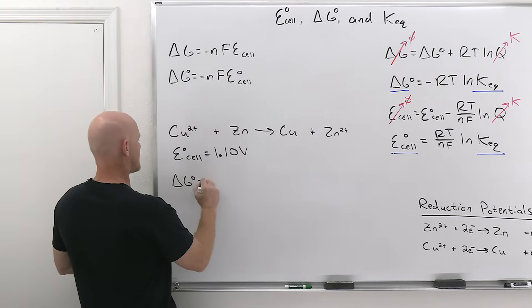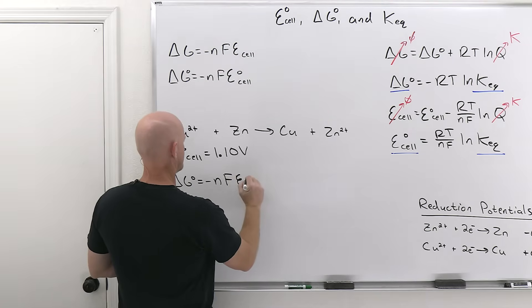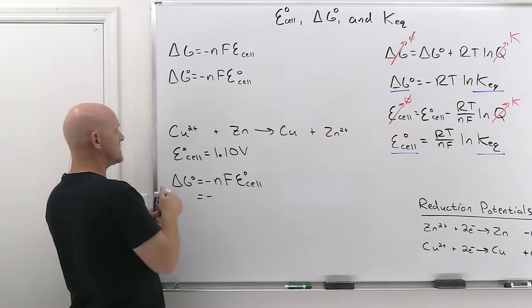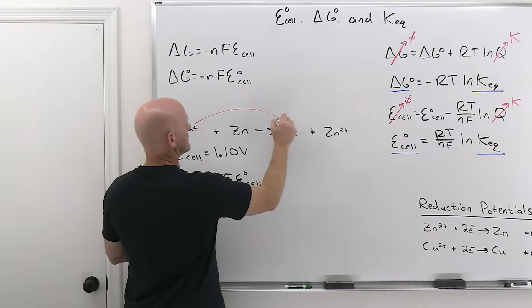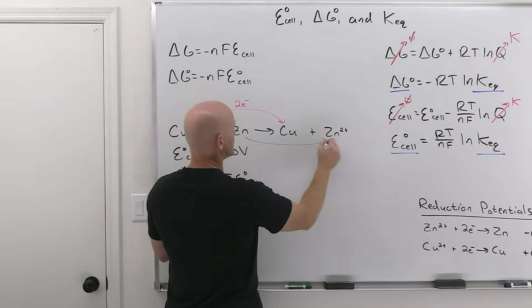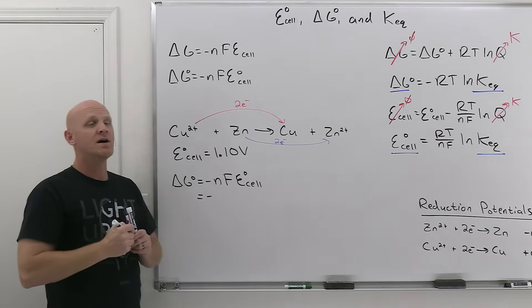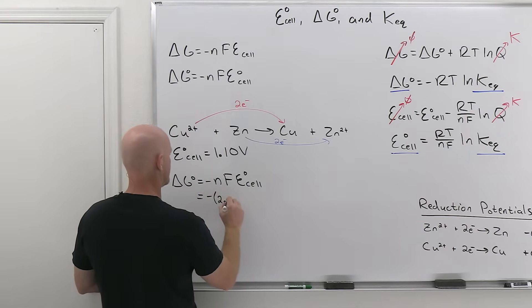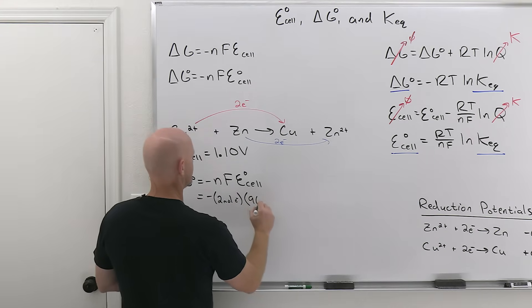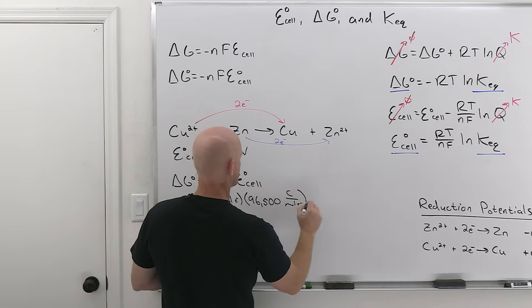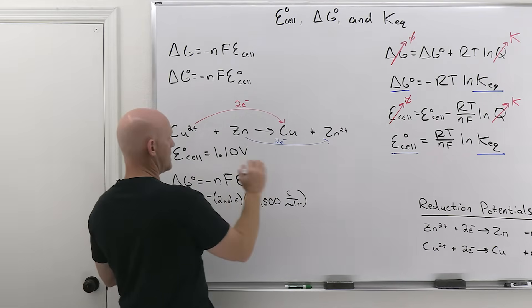So in this case, delta G standard equals negative N F times your E cell standard. And so in this case, that's going to be negative. And in this case, this is a two electron transfer, whether we're looking at it, copper two plus going to copper, that's two electrons being gained or zinc going to zinc two plus that's two electrons being lost. Overall, it is balanced to a two electron transfer. That's what gets plugged in right here. So two moles of electrons, Faraday's constant, 96,500 coulombs per mole of electrons, and then times your standard cell potential here of 1.10 volts.